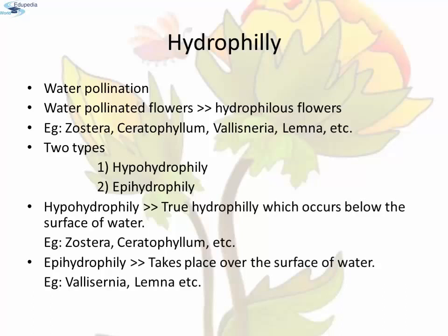Hypohydrophily is true hydrophily which always occurs below the surface of water. For example, Zostera and Ceratophyllum. Zostera marina is a submerged marine angiosperm. The pollen grains of Zostera are elongated and needle-like and without any exine. When they reach the stigma, they coil around it and germinate. Ceratophyllum is also a submerged freshwater plant. Each male flower of this plant produces 30 to 45 stamens. The anthers abscise or cut off at the base and float to the surface of water and dehisce. The pollen grains liberated germinate and sink in water; while sinking, they come in contact with the stigma of female flowers to affect pollination.